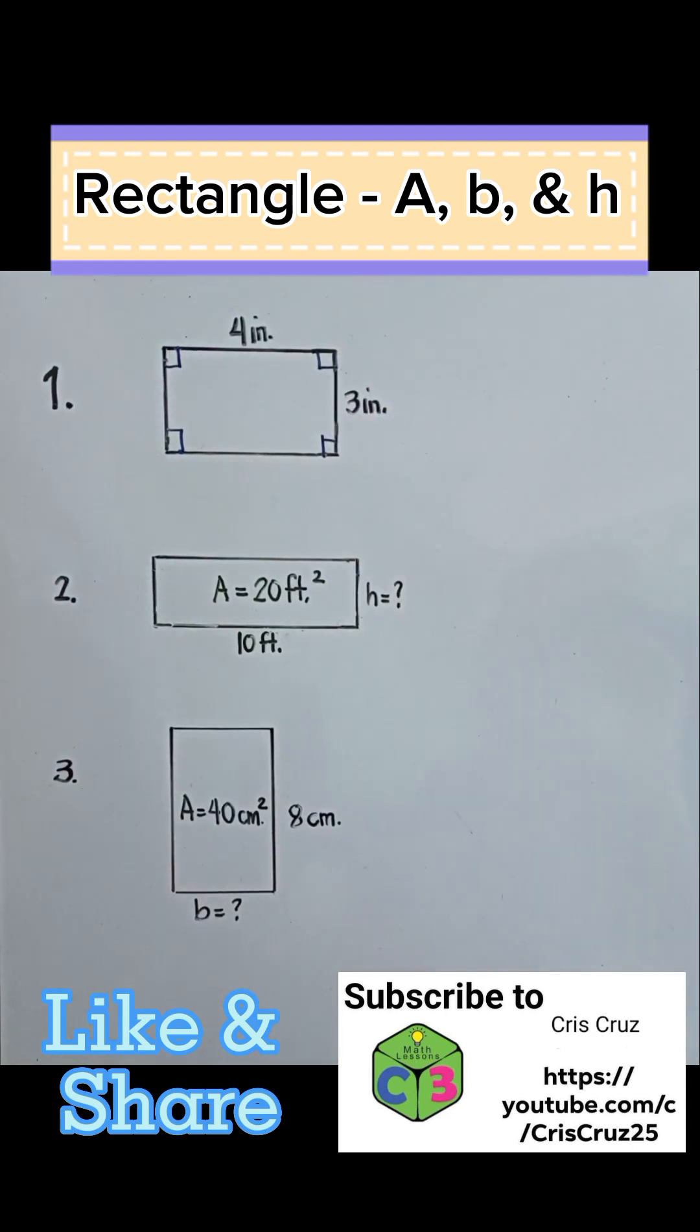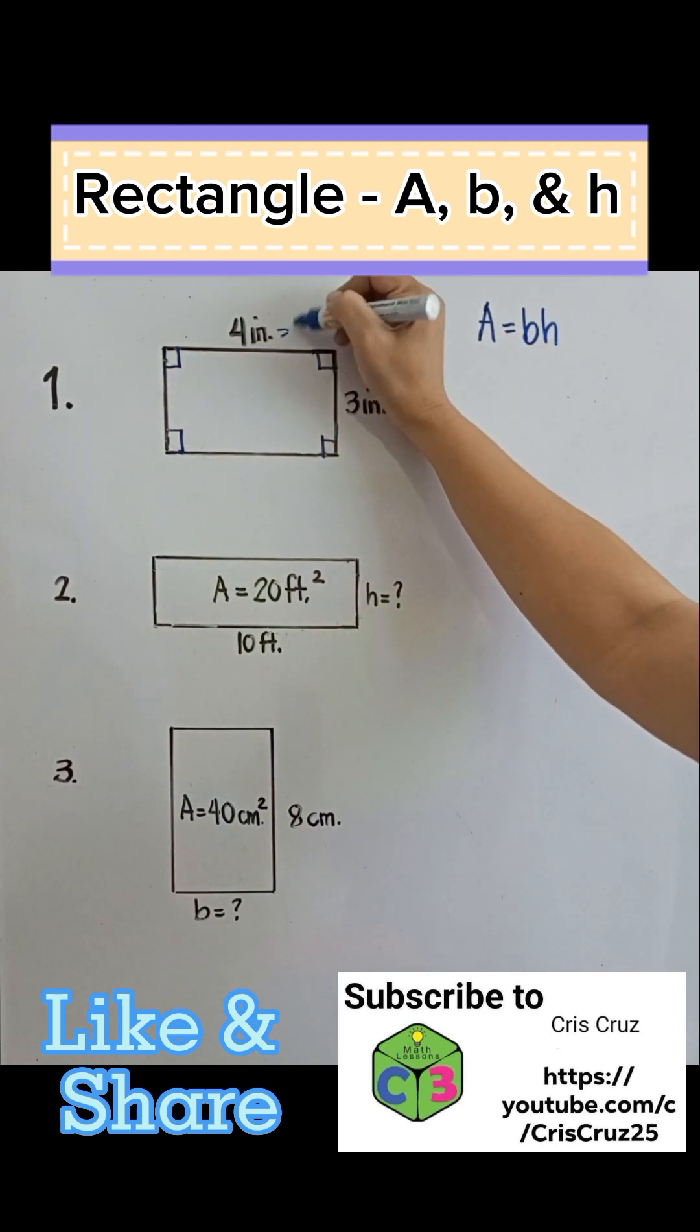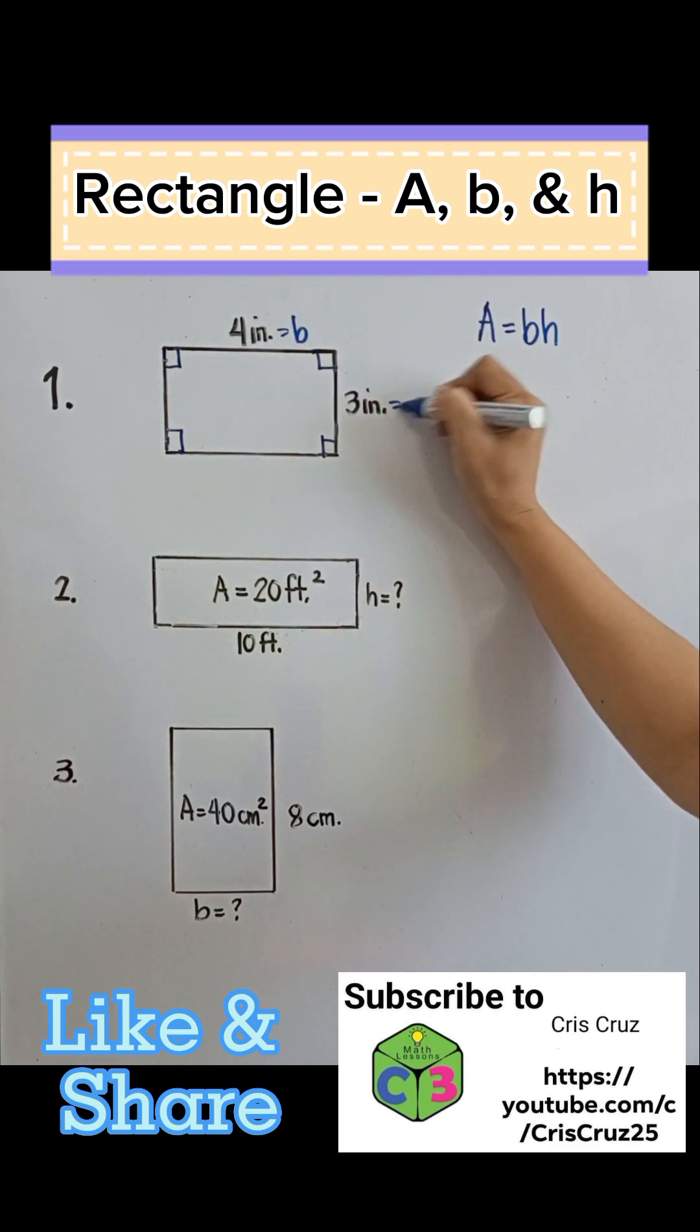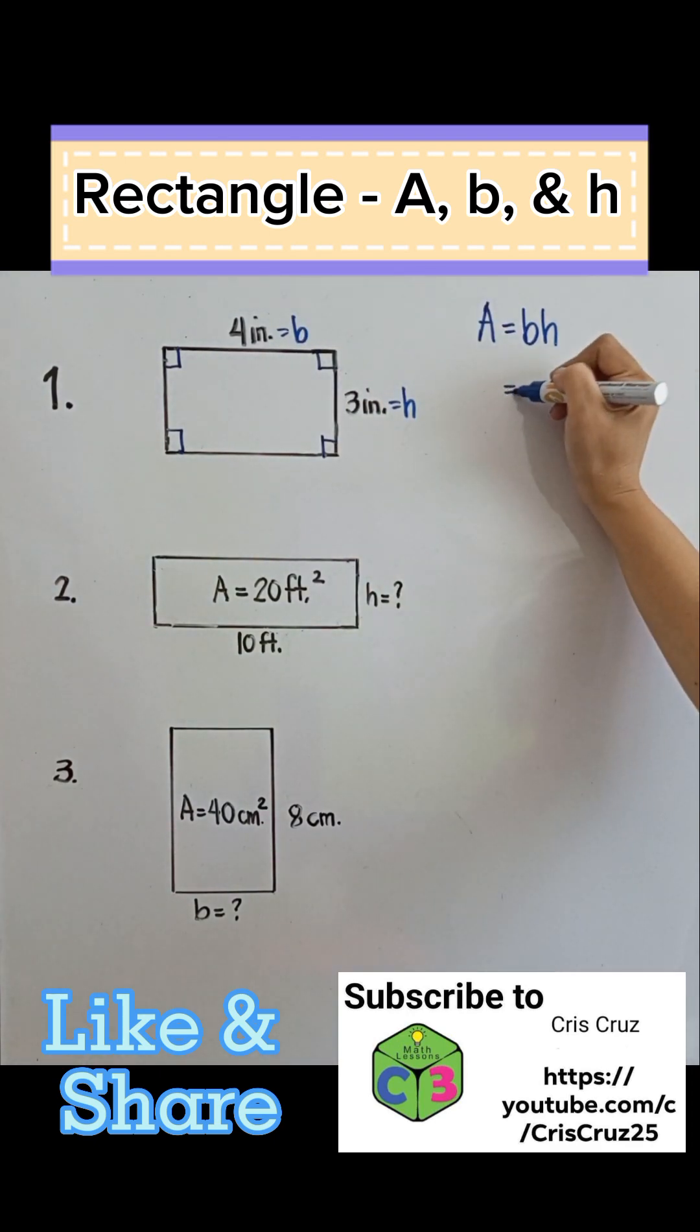Now, this is a rectangle. The area of a rectangle is base multiplied by the height. This is our base, and this is our height. So to solve for the area, we simply have to multiply our base by the height.